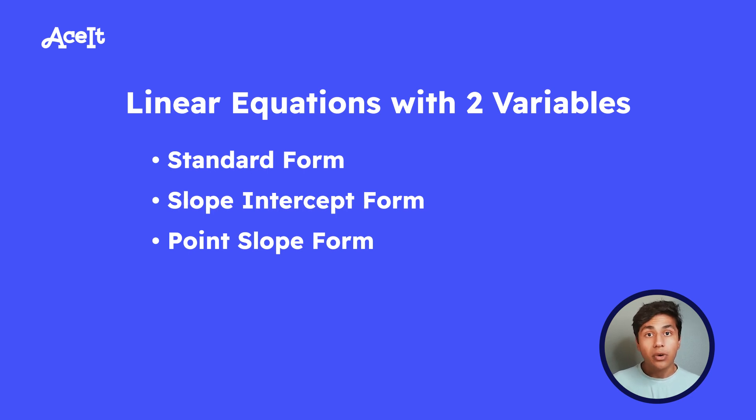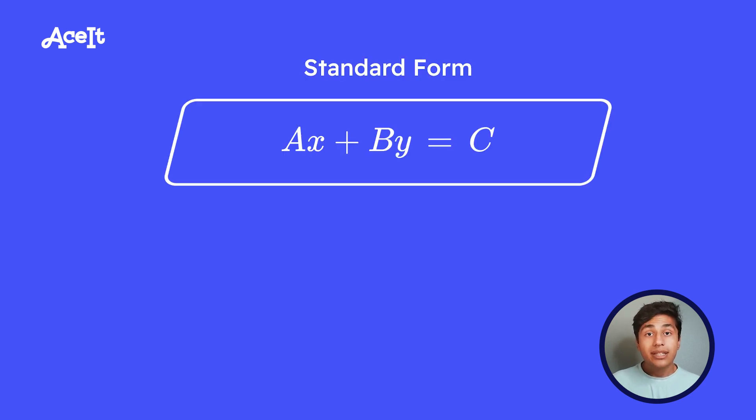We're going to start with the standard form of linear equations. The standard form is ax plus by equals c, where a, b, and c are constants, and x and y are variables.